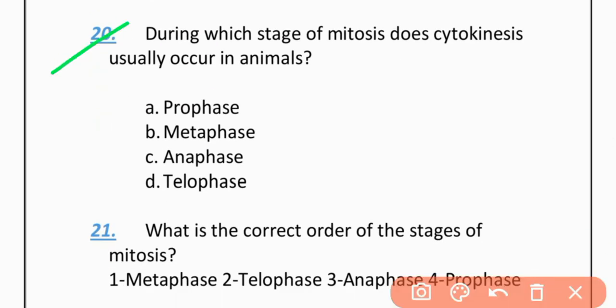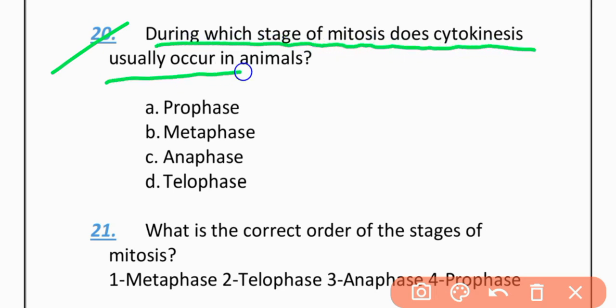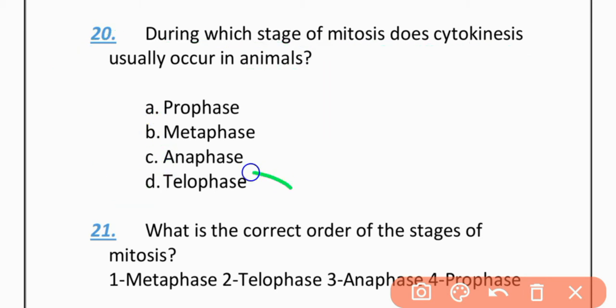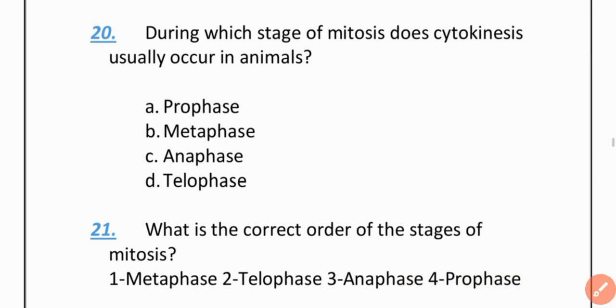MCQ 20: During which stage of mitosis does cytokinesis usually occur in animals? Option A: Prophase. Option B: Metaphase. Option C: Anaphase. Option D: Telophase. The correct option is D — Telophase.